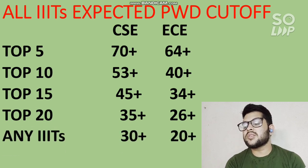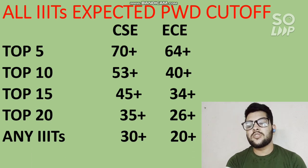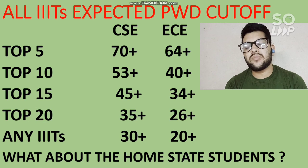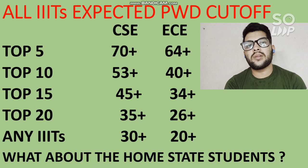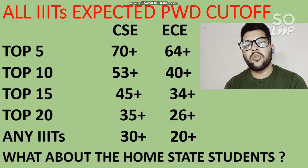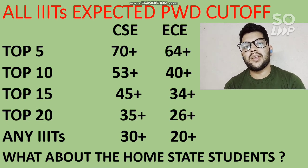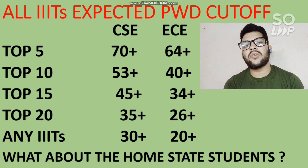For top 20 Triple-ITs: CS requires 35+ percentile and EC requires 26+ percentile. For any Triple-IT: CS requires 30+ percentile and EC requires 20+ percentile. Regarding home state students: there is no home state reservation in Triple-ITs, but for NITs and GFTIs, home state students get reservation benefits. With better counseling, you can get seats at much lower percentiles if you are from the home state of that NIT.